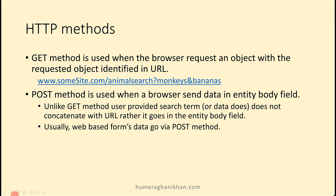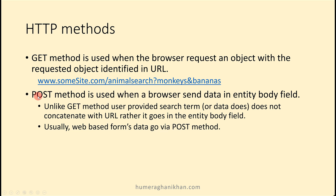Beside the GET method, there are many other options for the method field. The GET method is used when the browser requests an object, with the requested object identified in the URL. For example, searching for 'monkey' and 'banana' — the search terms are given in the URL. This is shown in the example provided.